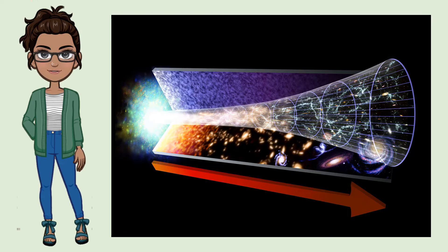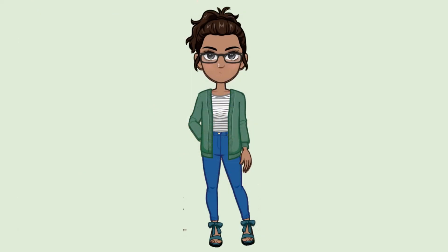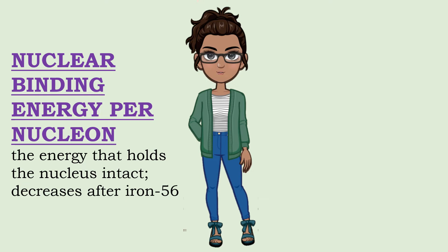Nucleosynthesis is the process by which new nuclei are formed from pre-existing or seed nuclei. The Big Bang nucleosynthesis produces hydrogen and helium, whereas stellar nucleosynthesis produces elements up to iron in the core of the stars. If stellar nucleosynthesis produces only elements up to iron, then what type of nucleosynthesis produces the elements heavier than iron? The fusion reactions cannot produce nuclei higher than iron-56 because fusion reaction becomes unfavorable. This is because the nuclear binding energy per nucleon — the energy that holds the nucleus intact — decreases after iron-56. Therefore, different pathways are needed for the synthesis of heavier nuclei.